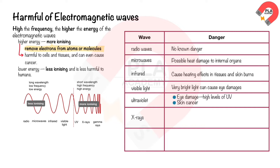X-rays are highly ionizing and can penetrate the body to cause internal damage, kill cells, cause gene mutations, and cancer. Gamma rays have similar harmful effects to X-rays as they are also among the most ionizing radiation. It is important to note that harmful effects depend on the amount of radiation absorbed — a small amount may not be harmful, but a large amount can be very harmful.